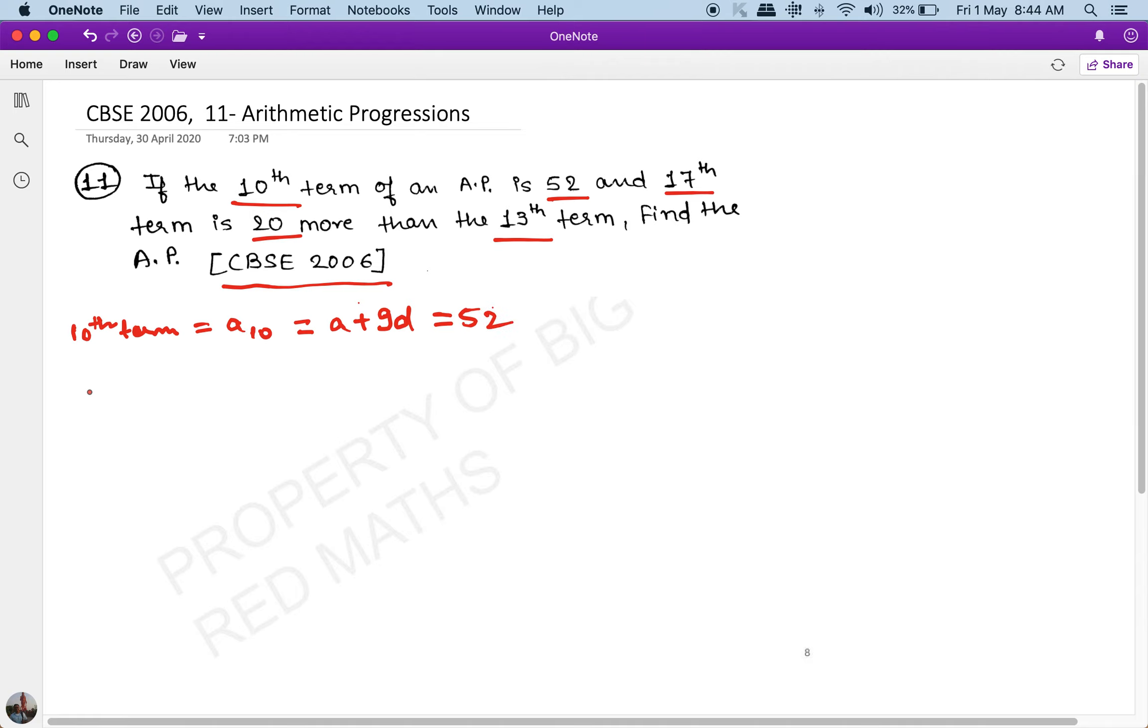The second condition says the 17th term, which is a₁₇, is 20 more than the 13th term. So a₁₇ = a + 16d equals 20 plus the 13th term, which is a + 12d.